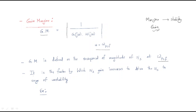The actual definition is: it is the factor by which the system gain can be increased to drive the system to the verge of instability. For example, if we have an unstable system and we want to make it stable, we need to multiply by some gain factor. That factor is called the gain margin.